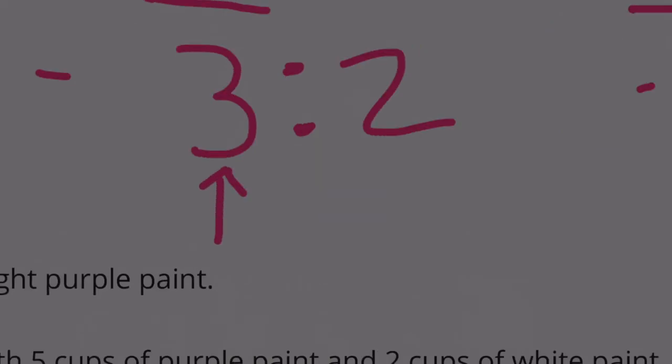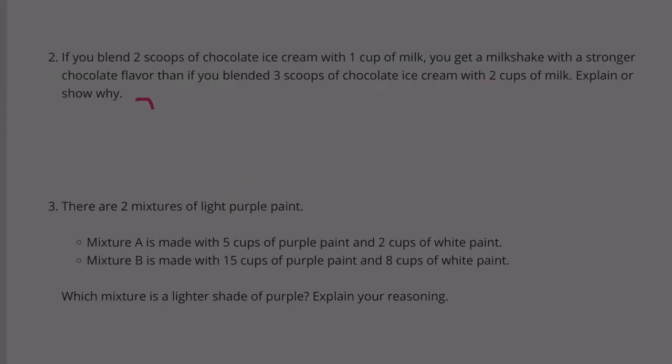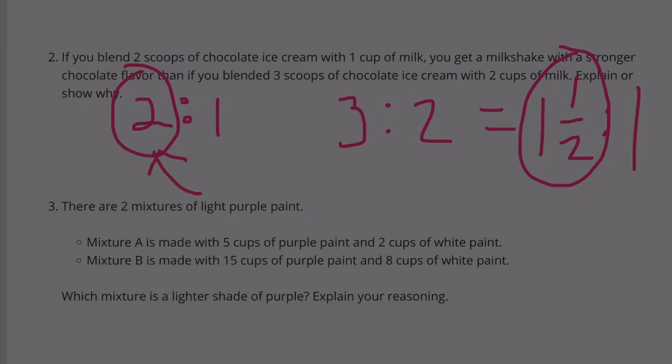In this case, it's not twice as much. It's 1 and a half times as much, so it's not going to be as strong. 2 to 1 compared to 3 to 2, which is the same as 1.5 to 1. So when you compare 1.5 to 1 with 2 to 1, it shows that the 2 to 1 had more ice cream.